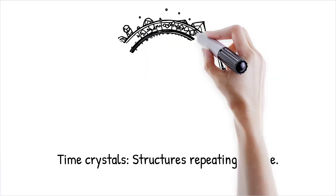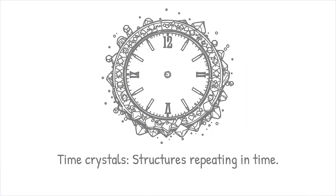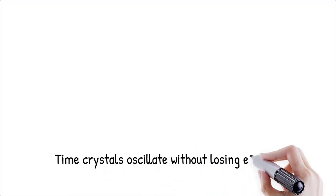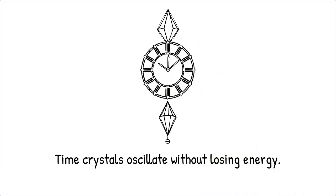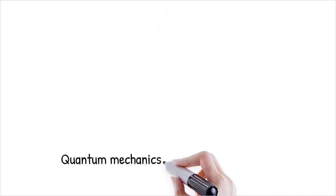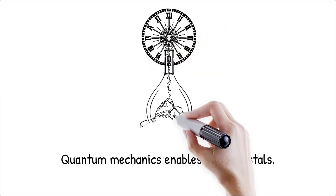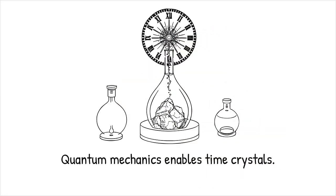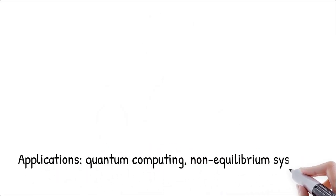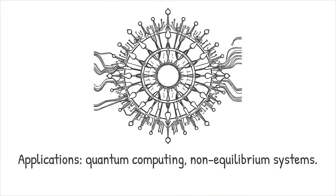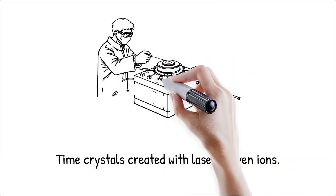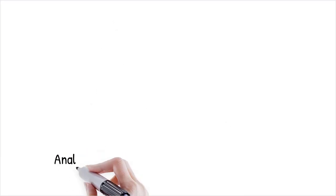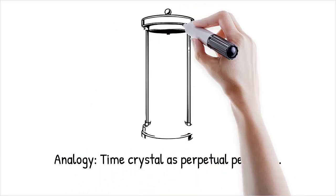Time crystals are a newly discovered phase of matter where particles form a structure that repeats not in space, but in time. Unlike traditional crystals with regular spatial patterns, time crystals oscillate between states without losing energy, breaking traditional thermodynamic rules. Time crystals are made possible by quantum mechanics and require careful isolation from their environment to prevent energy loss. They could have applications in quantum computing and understanding non-equilibrium systems. Scientists have created time crystals using laser-driven ions or superconducting qubits in highly controlled conditions. A time crystal is like a perpetual pendulum that swings forever without slowing down.